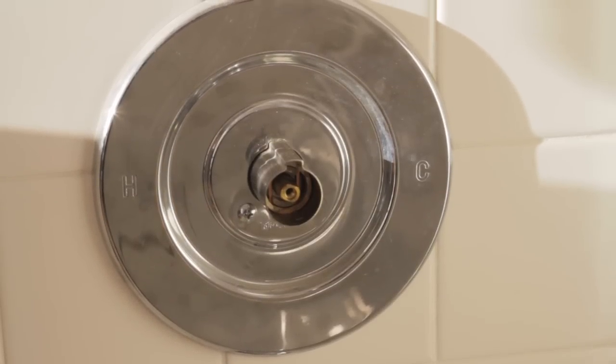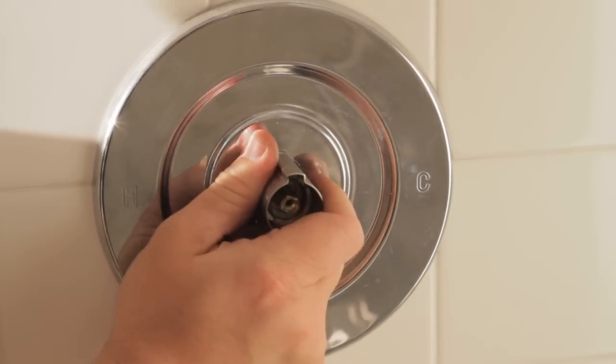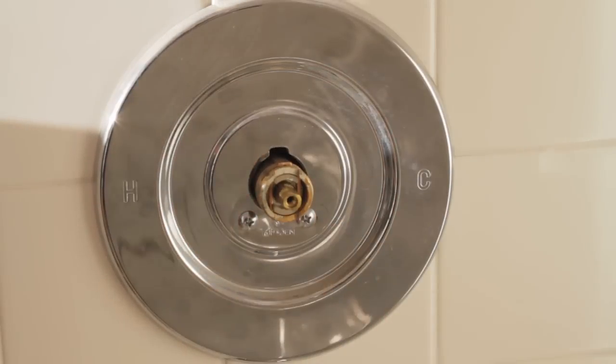First thing you do is remove your handle. This one has a nice little sleeve that needs to be pulled off, called an escutcheon.